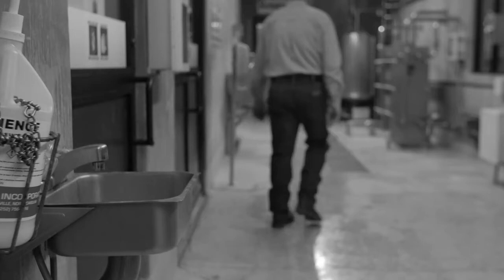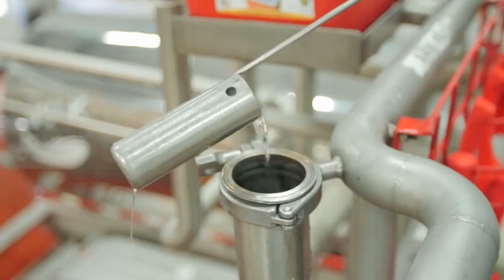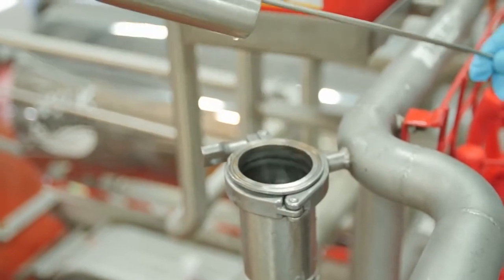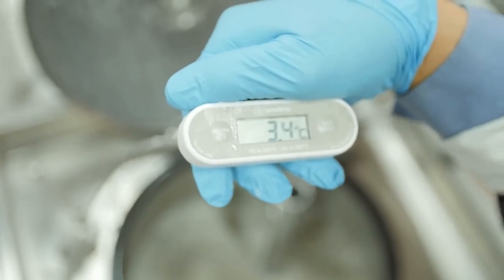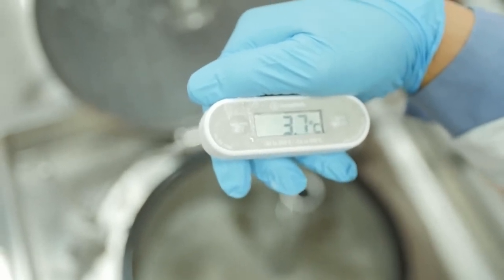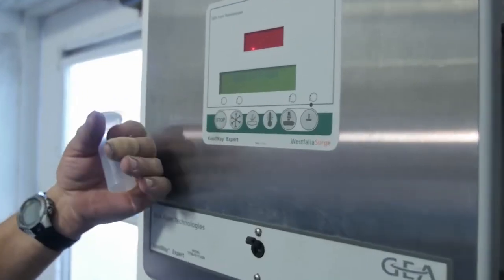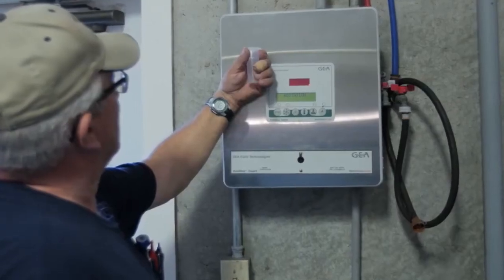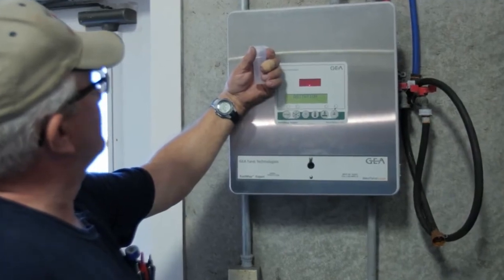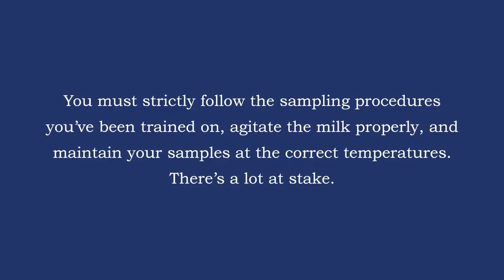If you don't sanitize your sampling equipment properly, or you don't store samples cooler than 40 degrees in transit, bacteria counts will be higher than they should be. Improper agitation will also cause higher bacteria counts — you must allow the tank to agitate for its recommended period of time. You must strictly follow the sampling procedures you've been trained on, agitate the milk properly, and maintain your samples at the correct temperatures.